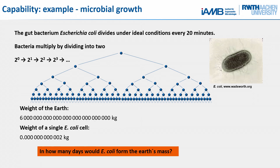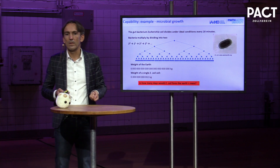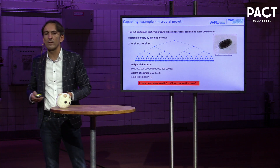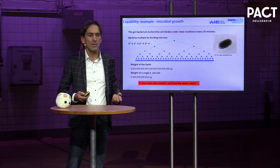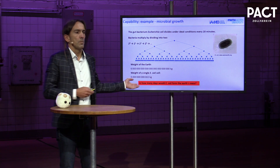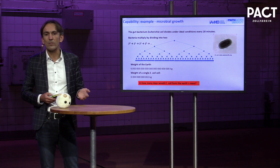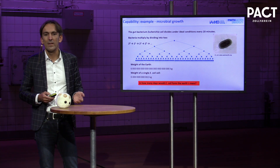If you make a calculation: this is the weight of our Earth, and this is the weight of an E. coli — how many days or months would it take that an E. coli, under ideal growth conditions with every cell doubling every 20 minutes, would weigh like the planet? It's less than two days. This is the problem of the exponential function that we just can't grasp as humans.